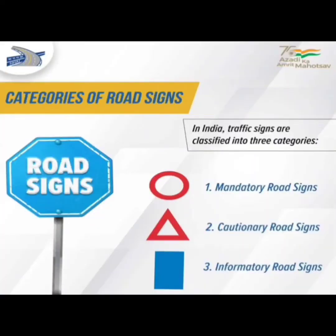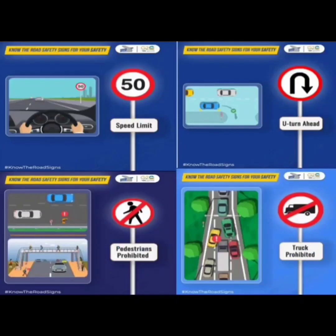Traffic signs in India are classified into three categories: mandatory road signs, cautionary road signs, and informatory road signs. Mandatory road signs are denoted by circles, cautionary signs are denoted by triangles, and informatory signs are in rectangles. Mandatory road signs are compulsory — road users must abide by them.